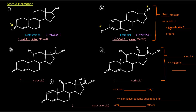Next up, numbers three and four: the corticosteroids. They are made in the adrenal cortex — so cortex, cortico, corticosteroids. They're also called corticoids for short. The first one on the left is a glucocorticoid, and the one on the right is a mineralocorticoid.